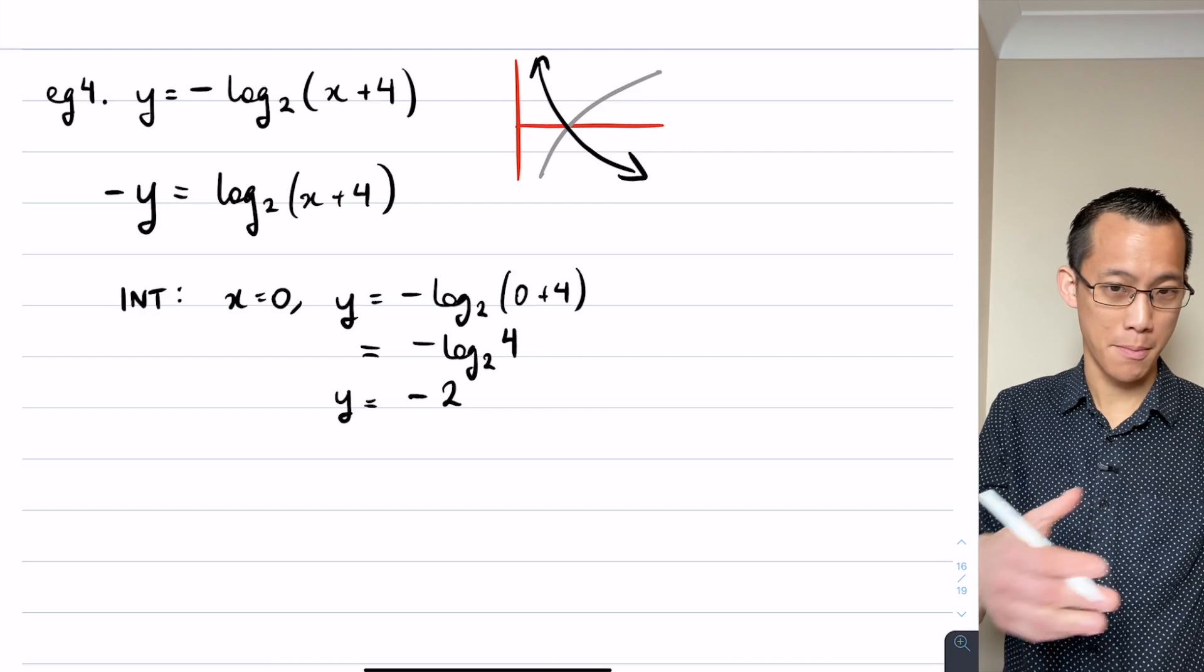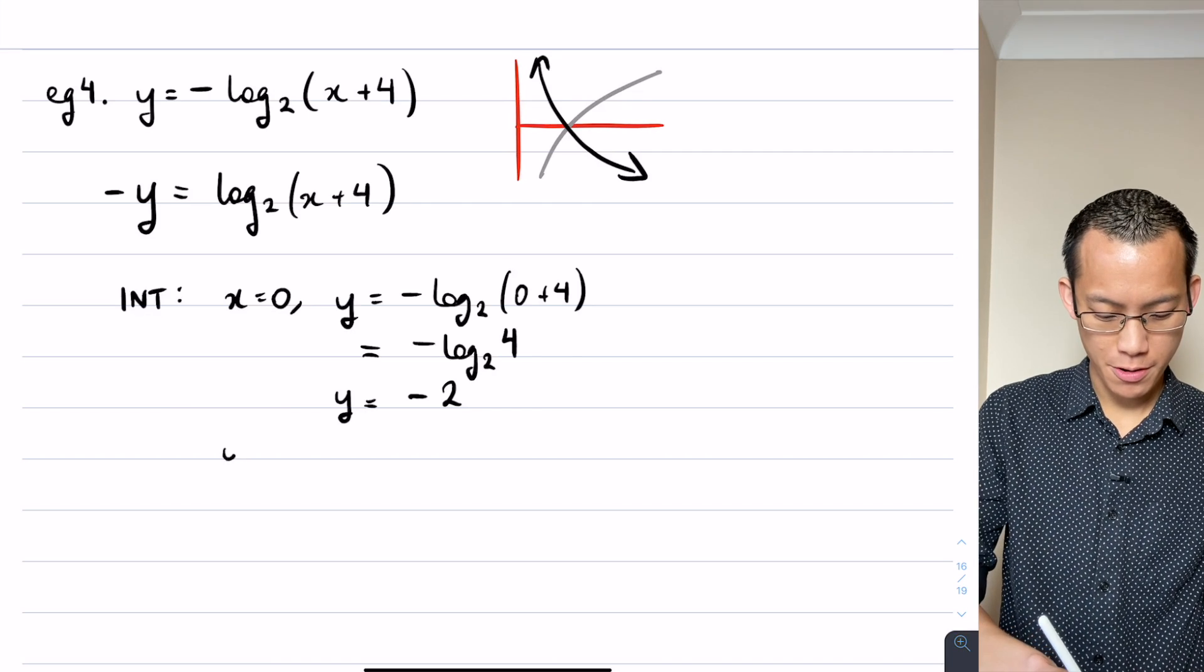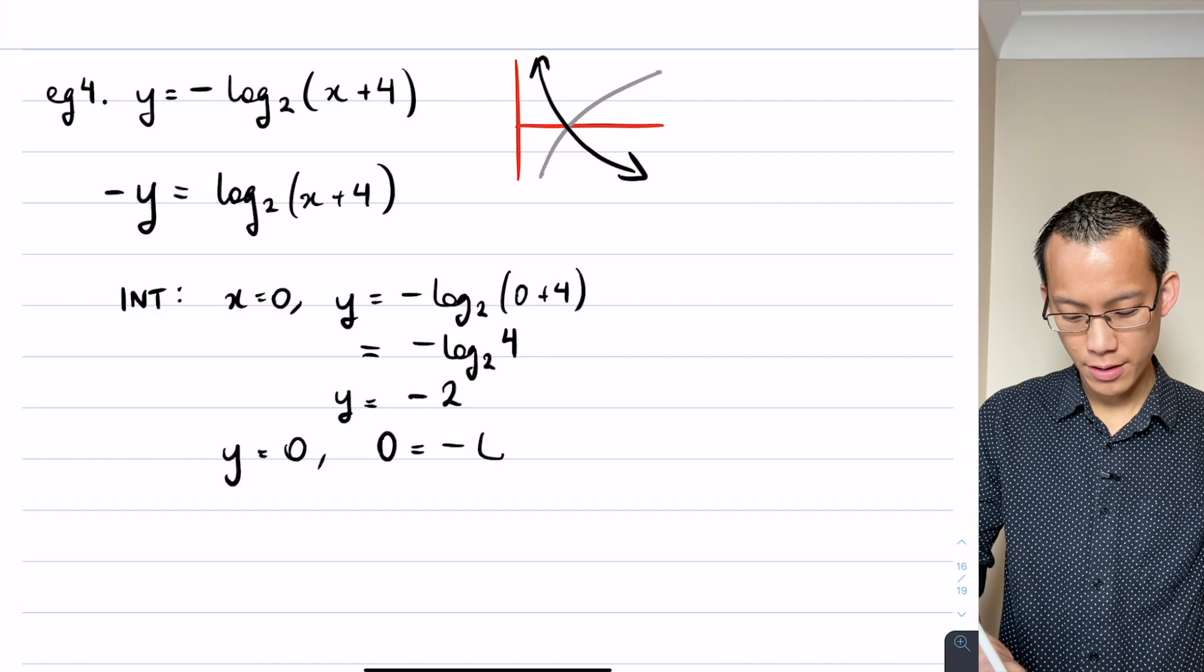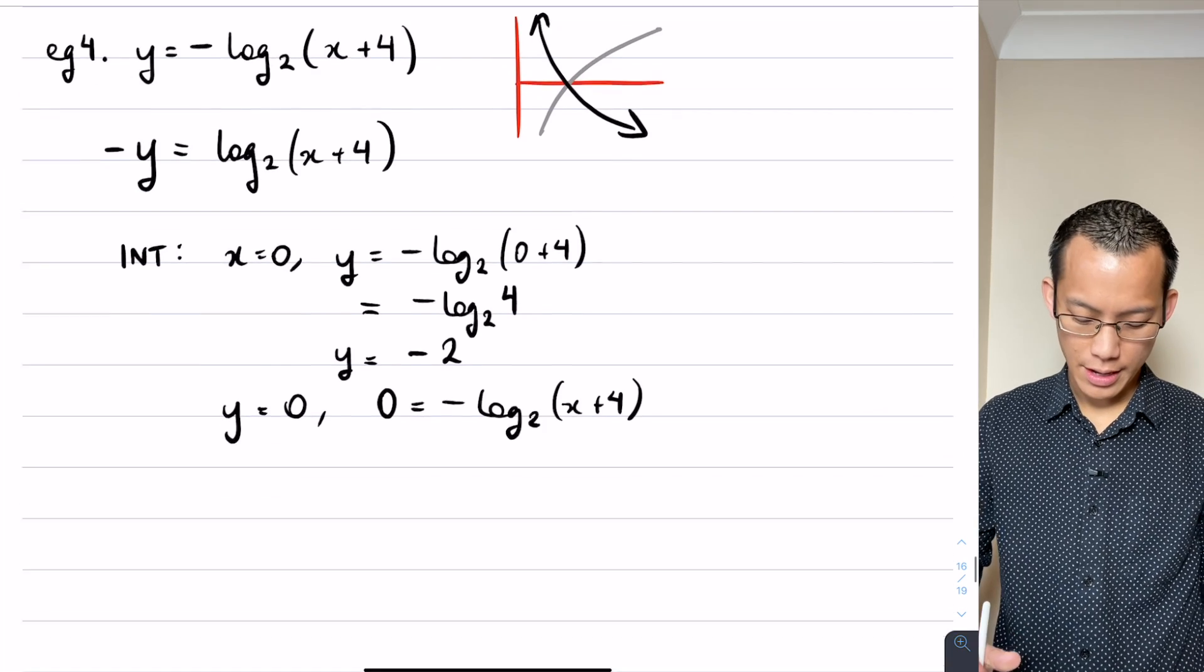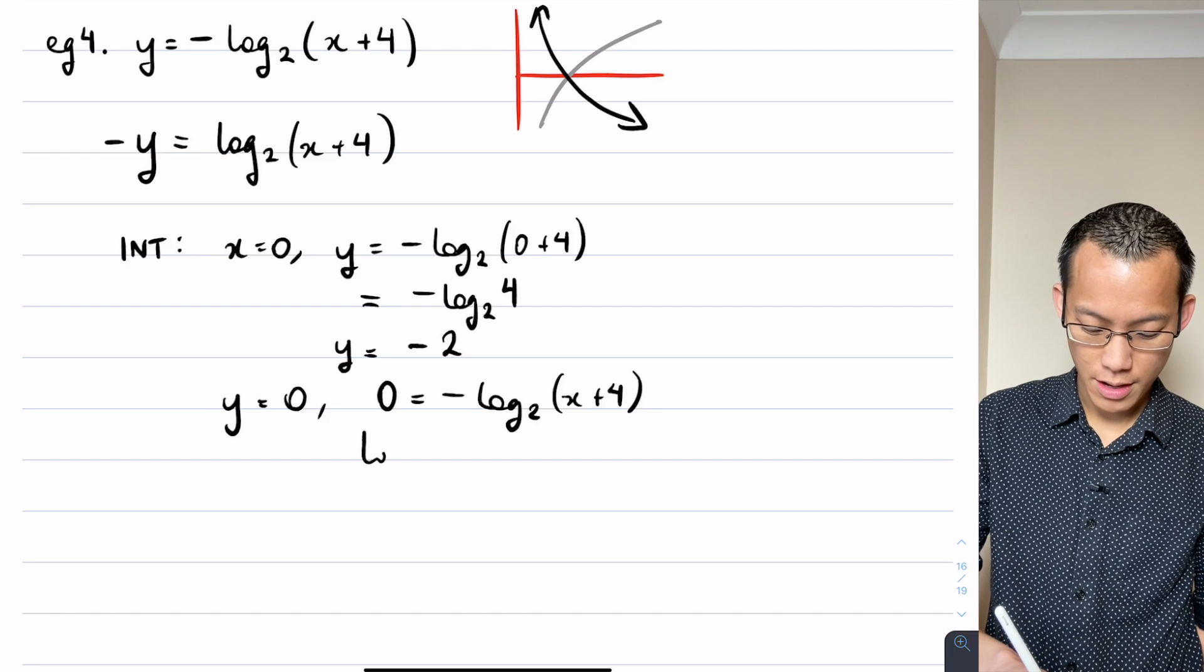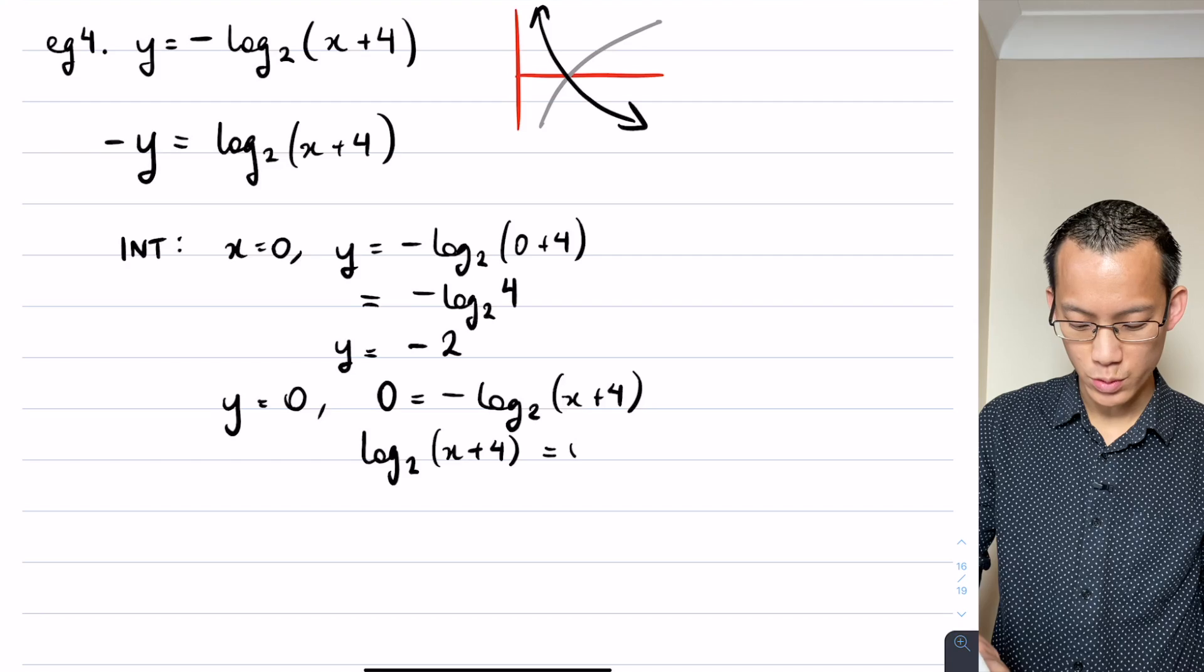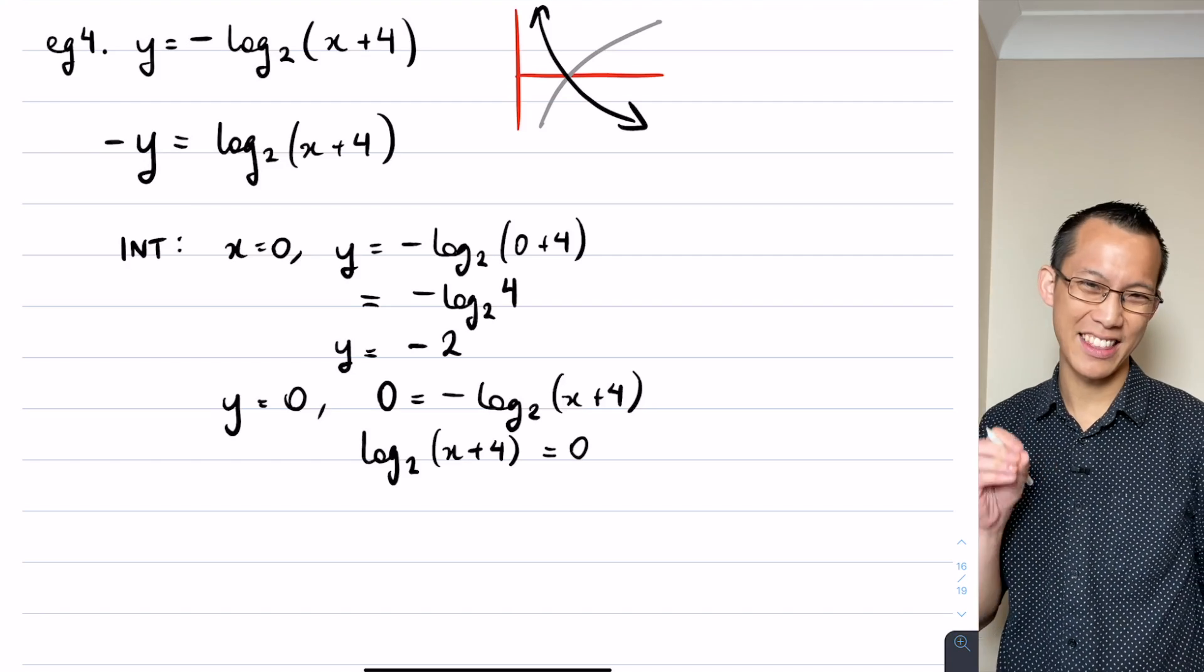So I'll go y equals 0. That means that I will get 0 equals negative log base 2 of x plus 4. That minus sign, I'll multiply both sides by negative 1, so you just get log base 2 of x plus 4 equals 0. And now I'm going to do the reverse of what I did earlier on in the lesson - I'm going to take this log equation and rewrite it as an exponential.